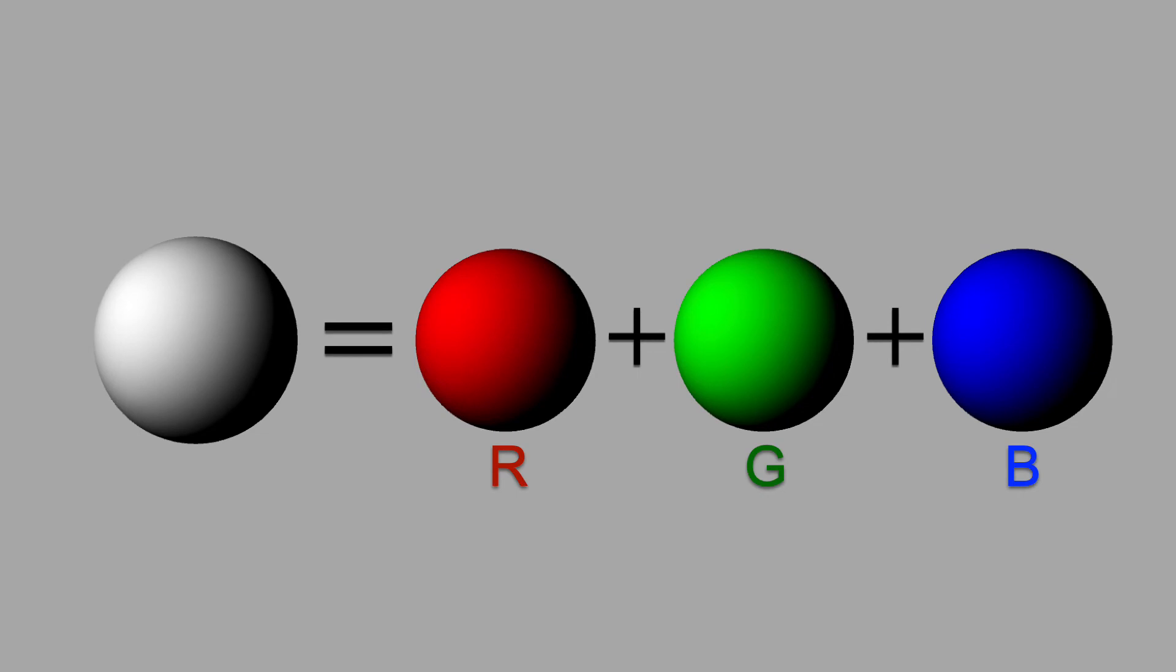We'll use three components, corresponding to the red, green, and blue. You can think of these as separate spheres, where if you add them up, you get the result, a gray sphere in this case.